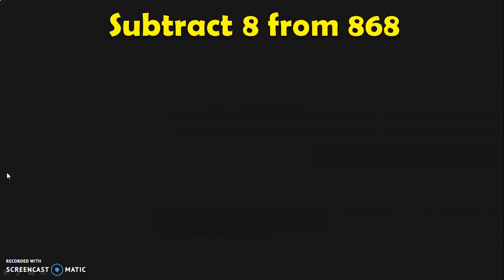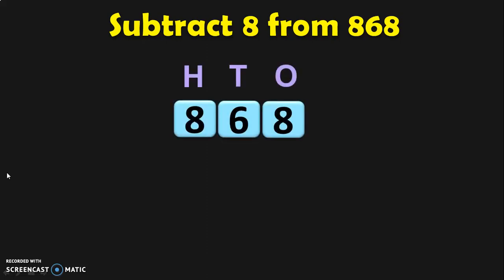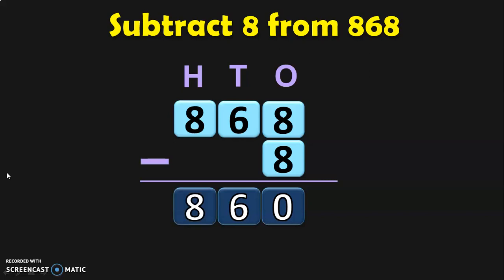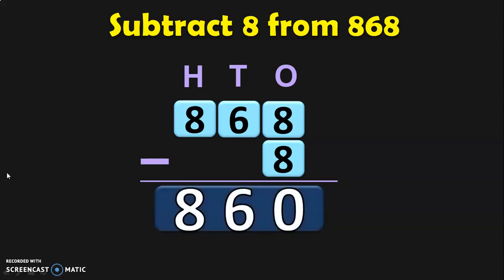Let us do another sum: subtract 8 from 868. Here we subtract a single-digit number from a three-digit number. Write the bigger number with place values — ones, tens, and hundreds. Then write the smaller number eight in the ones place. Without place values, children might mistakenly put eight in the tens or hundreds place, which would be wrong. Now begin subtraction: eight minus eight is zero. In the tens and hundreds place, just bring down the digits. The answer is 860.